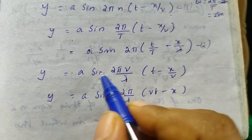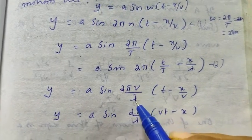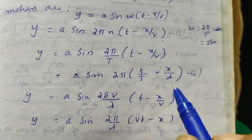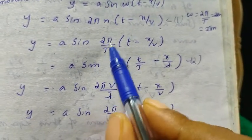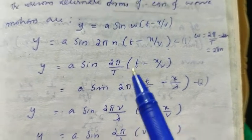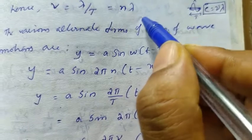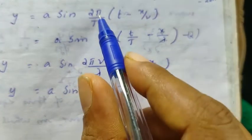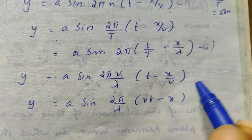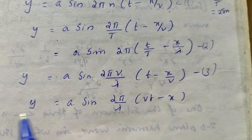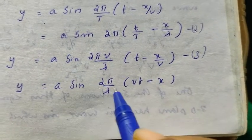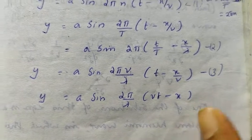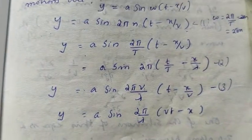Another form is y = a sin(2π · v/λ)(t − x/v), since 1/T = frequency n = v/λ. Substituting v/λ for 1/T gives this form. Taking v inside the bracket, we can also write the equation as y = a sin(2π/λ)(vt − x). These are different alternative forms of the wave equation.